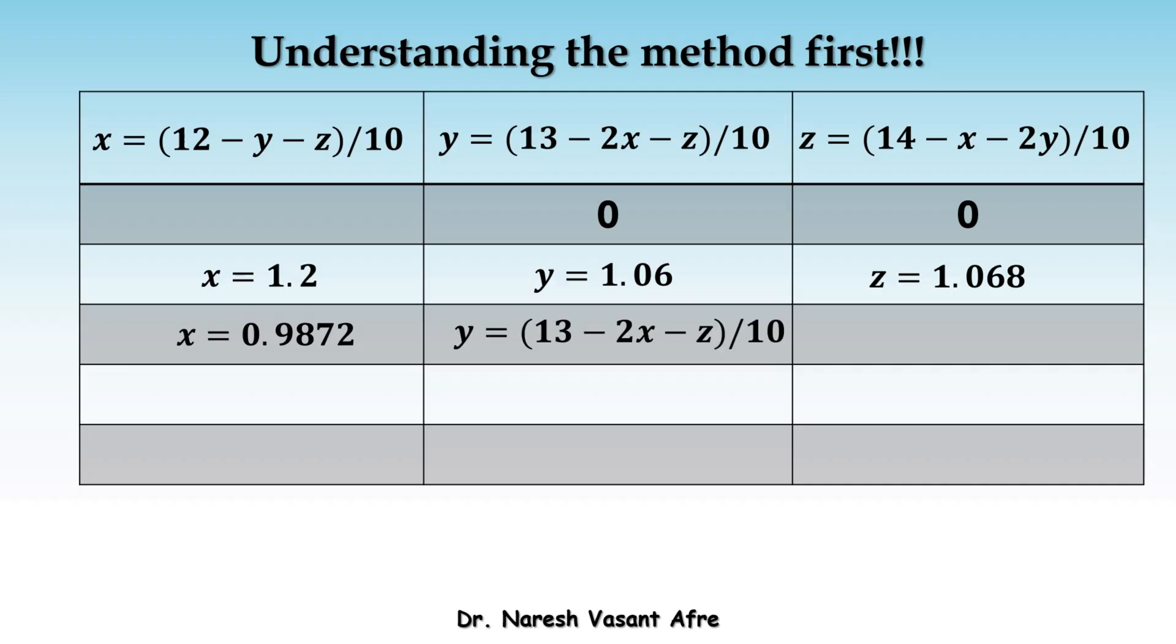Now, to compute Y, we use the latest available value of X and the latest available value of Z and that gives us Y is equal to 0.9958. We then use these two latest values of X and Y to compute Z and we get Z is equal to 1.1021. So, these are the values of XYZ in the second iteration.